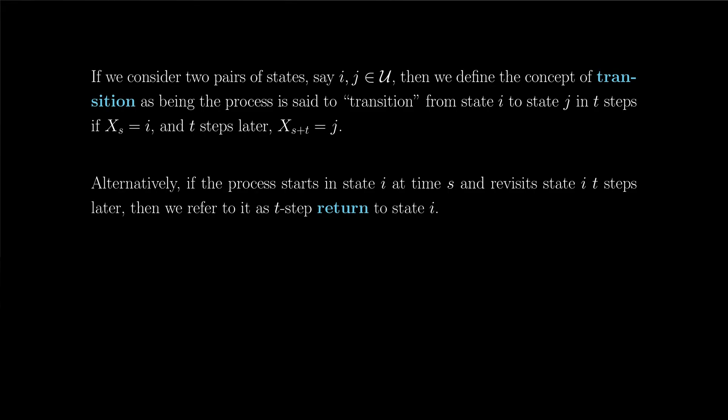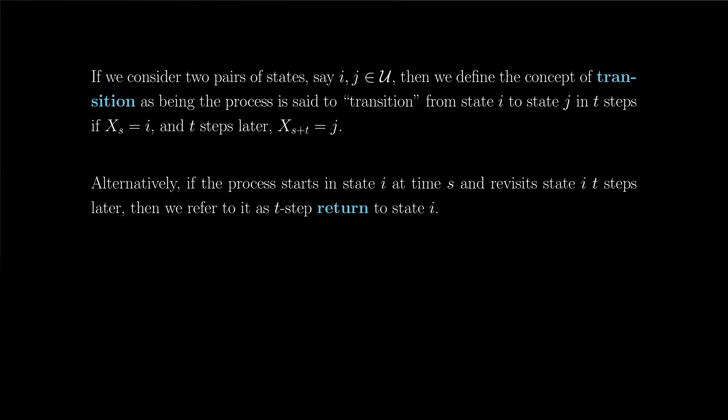So if we consider two pairs of states, say i and j in cal u, then we define the concept of transition as being the process is said to transition from state i to state j, t steps later, if x sub s is equal to i, so the process is in state i at time s, and t steps later, the process is in state j, so x sub s plus t equals j. Alternatively, if the process is in state i at time s, and revisits that state t steps later, then we refer to it as t step return to state i.